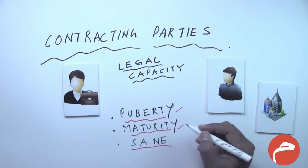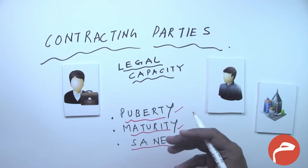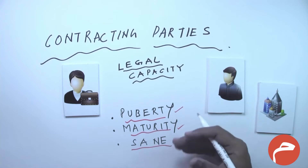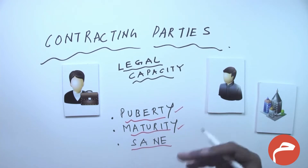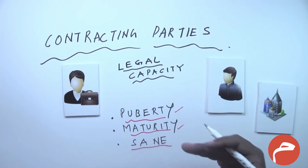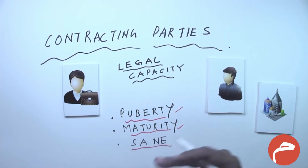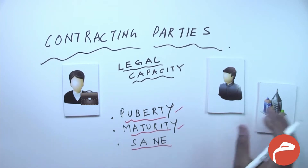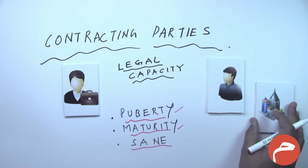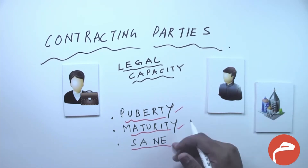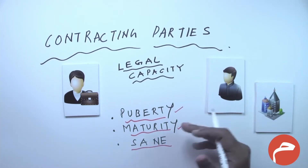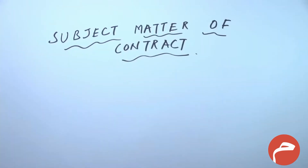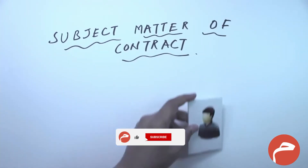Puberty means a person needs to be physically mature to enter into a contract. Maturity, according to jurists, means good and proper dealing with wealth from a worldly point of view. And sane means that the mental capacity of the person has to be normal for that person to enter into a legal contract.